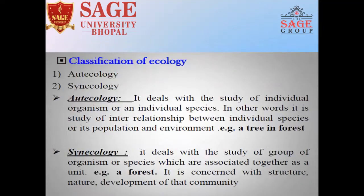Classification of Ecology. Classification of Ecology: first is Autecology and second is Synecology. In Autecology, it deals with the study of an individual organism or an individual species. For example, a tree in the forest — the tree is an individual species or individual organism.